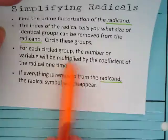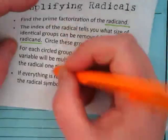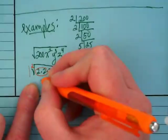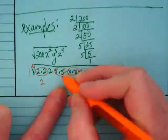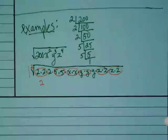Step three says for each circled group, the number or variable will be multiplied by the coefficient of the radical one time. So I've got two twos. I'm going to pull out one of them. I have two fives. I shouldn't say it that way. For that group of two twos, I'm pulling out a factor of two.